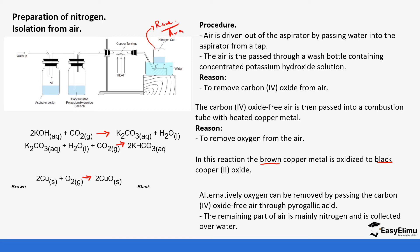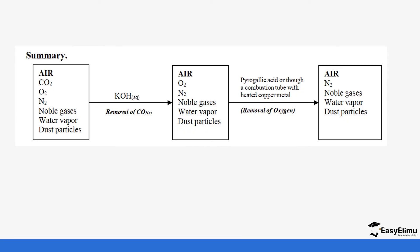Argon is part of the gases collected with nitrogen, so to make it as pure as possible we use fractional distillation of air. Before going to that, here is the summary: air contains carbon dioxide, oxygen, nitrogen, noble gases (mainly argon), water vapour, and dust particles.